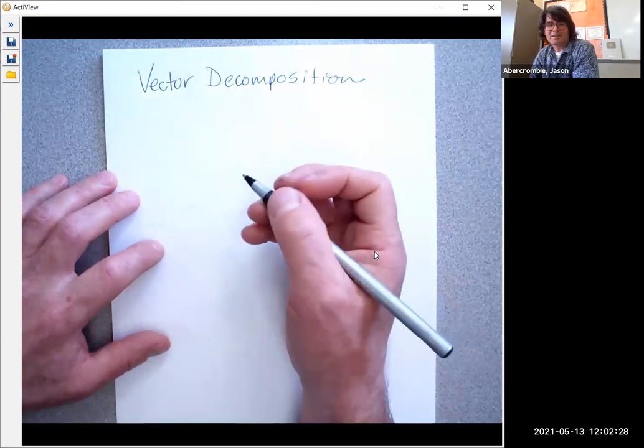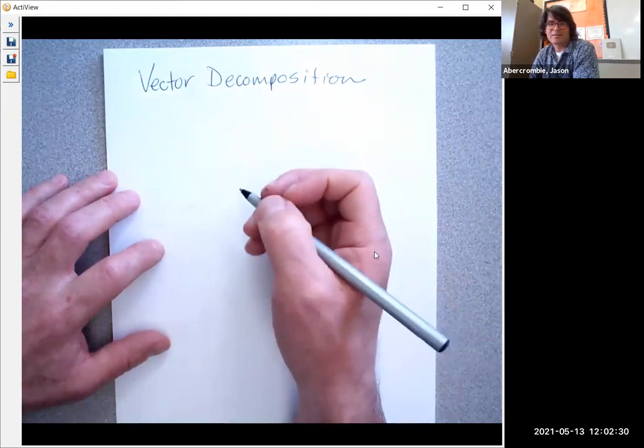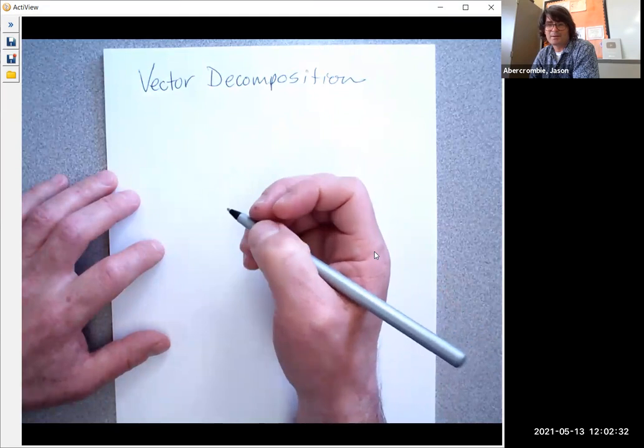Vector decomposition is simply the process of taking a vector and breaking it down into an X and Y direction.